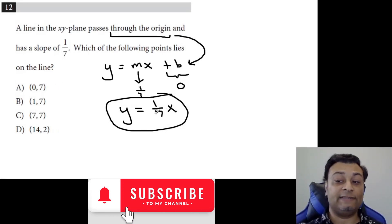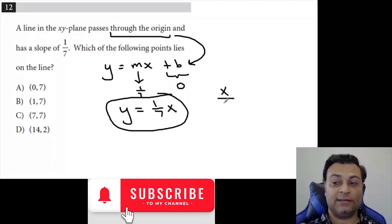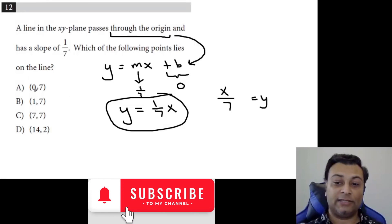So x divided by 7. X divided by 7 should give you the y. So that means if we take the x-coordinate and divide that by 7, we should get the y.